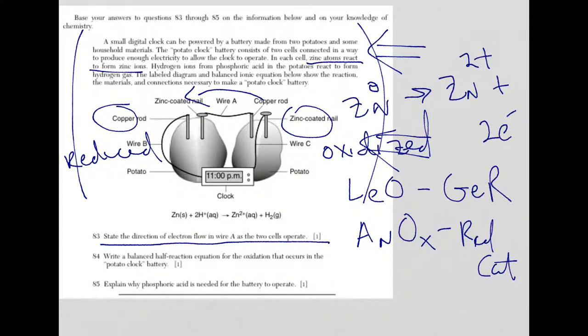For question 84, it says to write the balanced half reaction for the oxidation that occurs in the potato clock battery. Well, we have it. It's actually right here. Let me put it in red. So I have my zinc atoms, an oxidation number of zero, yielding zinc ions and two electrons.